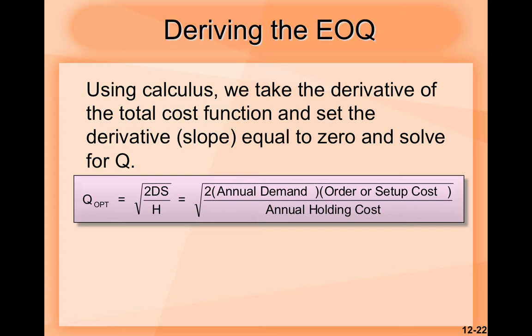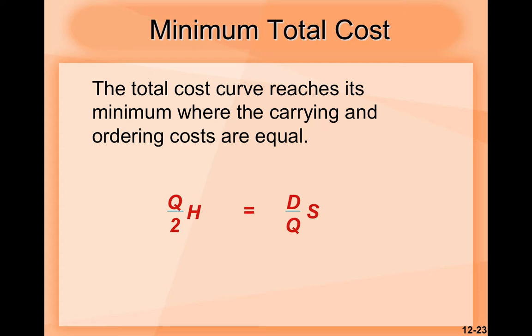This is the explanation of the Q-optimal formula. Now we have the minimum total cost: the total cost curve reaches its minimum where the carrying and ordering costs are equal. This is like a principle or law that we should follow.